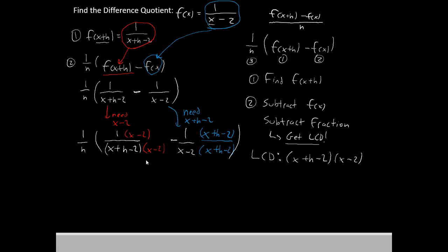Now that we have the same denominator on both of the fractions, it's okay to combine them. So now we'll still have the 1 over h on the outside. But now we'll have 1 times x minus 2 minus 1 times x plus h minus 2. And that entire thing is going to be over the LCD, seeing as how they both have the same denominator. x plus h minus 2 times x minus 2.